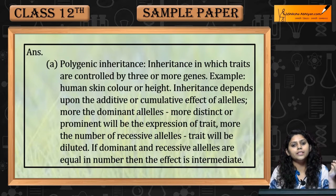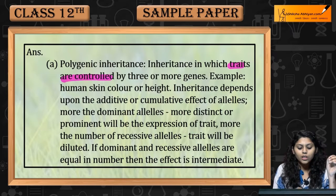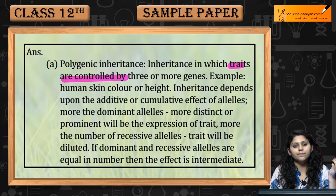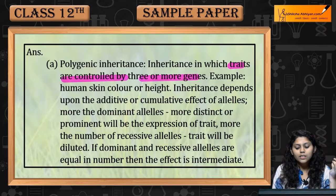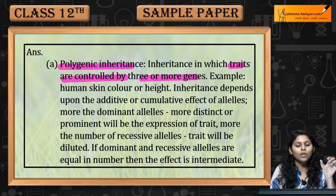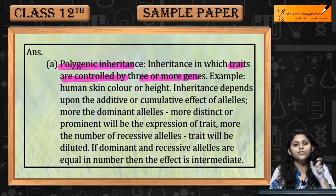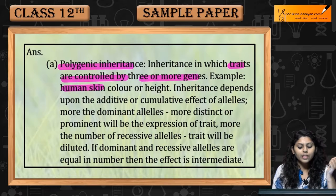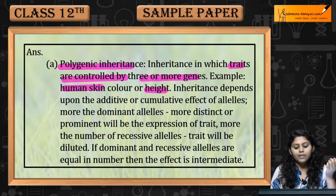Polygenic inheritance is inheritance in which traits are controlled by three or more genes. Poly means many, genetic is related to genes — many genes. Examples include human skin color or height.